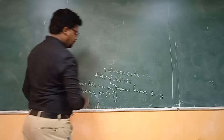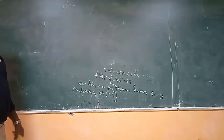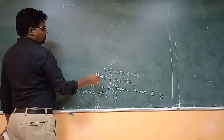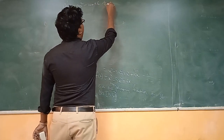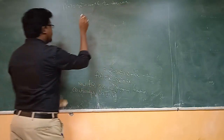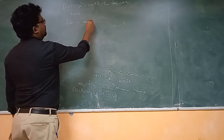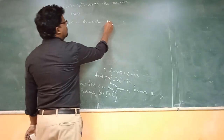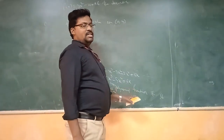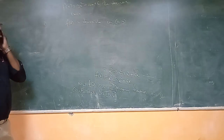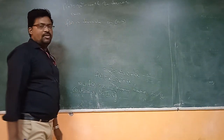Now we check whether the derivative exists or not. The derivative f'(x) = 3x² − 10x + 6. So the derivative exists, which means f(x) is differentiable on the open interval (0, 4).